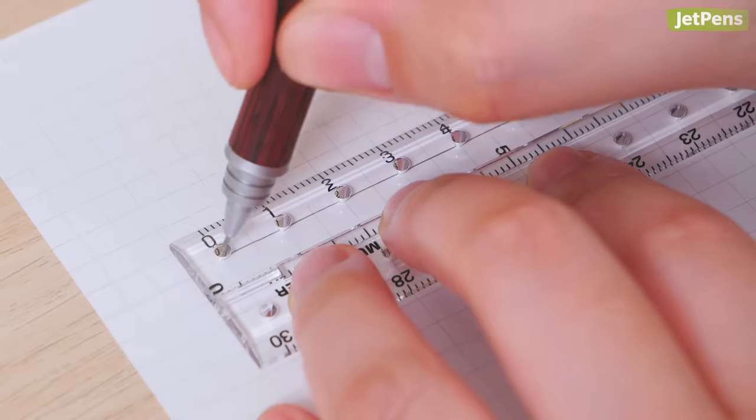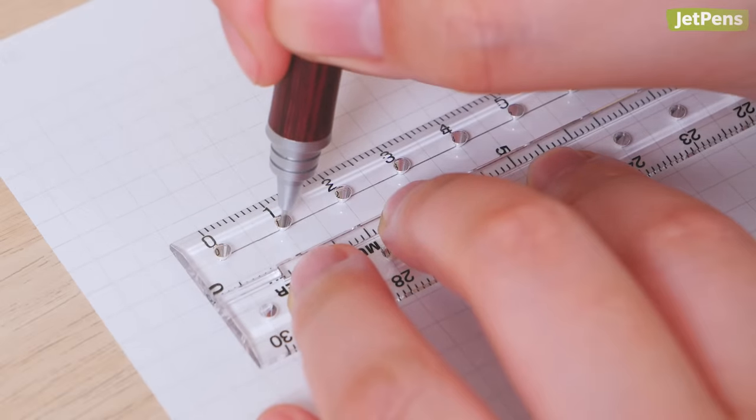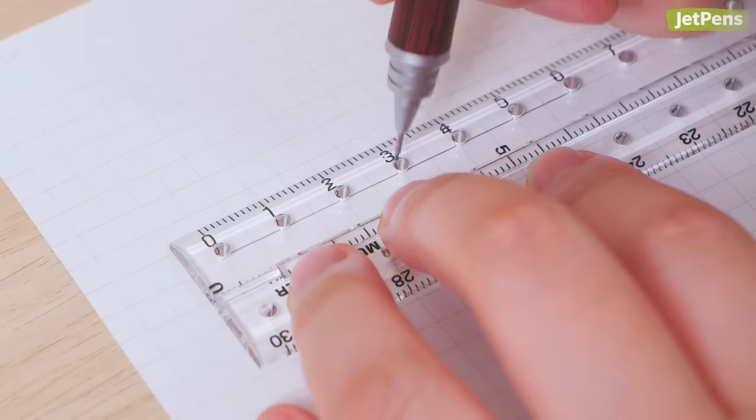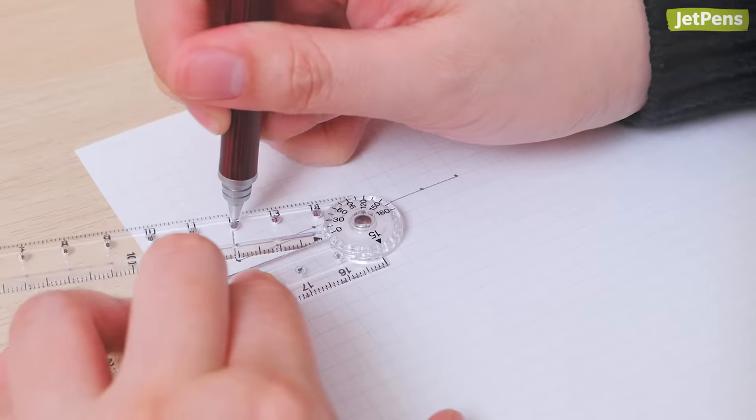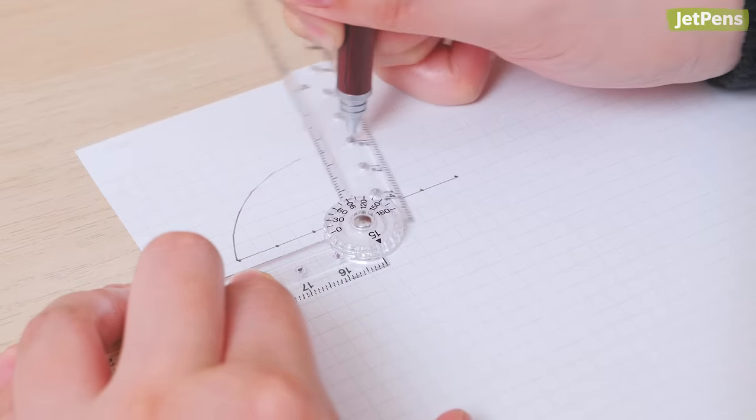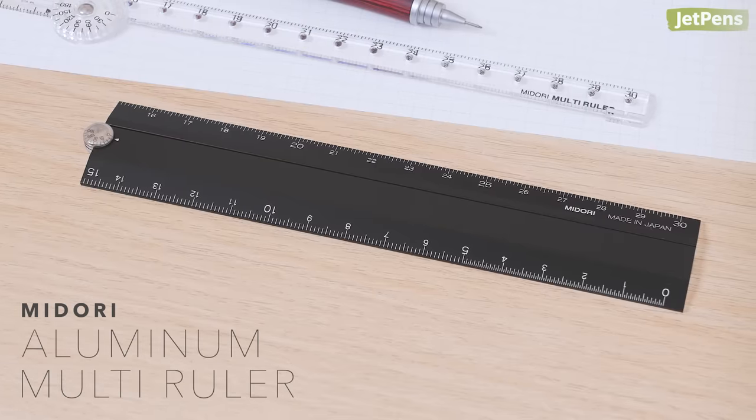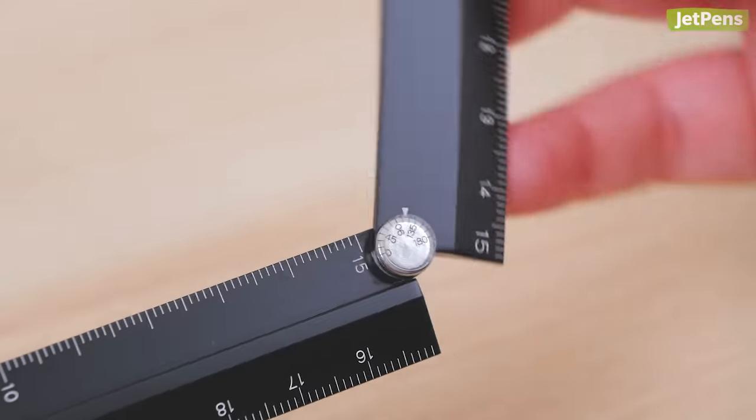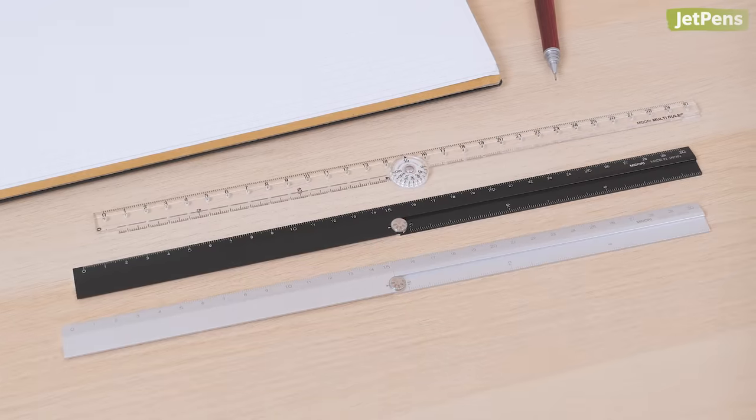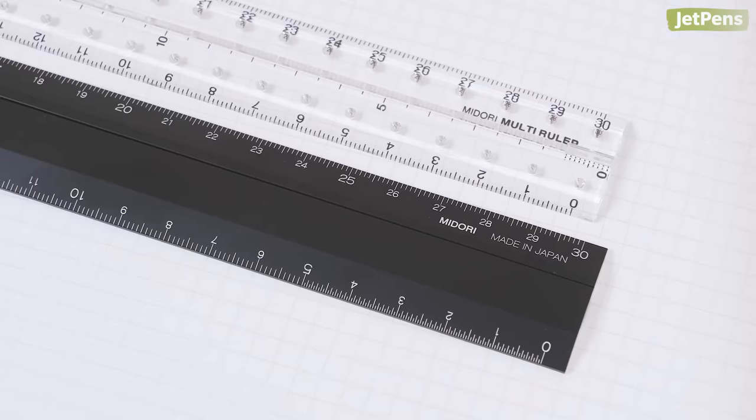Each arm has a small hole every one centimeter that you can use to make perfectly spaced dots along a line, or draw an arc by swiveling the arm. If you want something more durable, try the Aluminum Multi-Ruler. It shares the same extending and protractor features, though it lacks the small holes for drawing arcs.